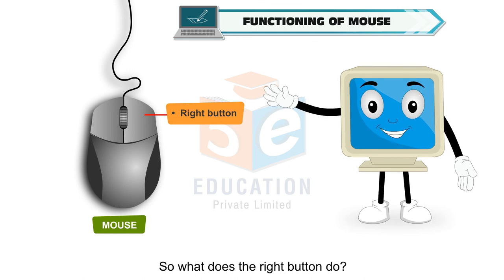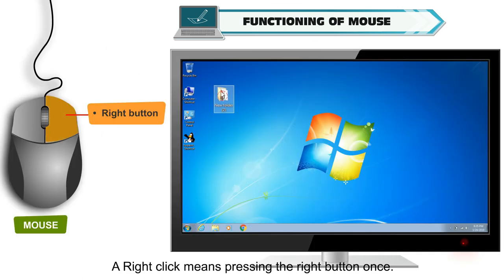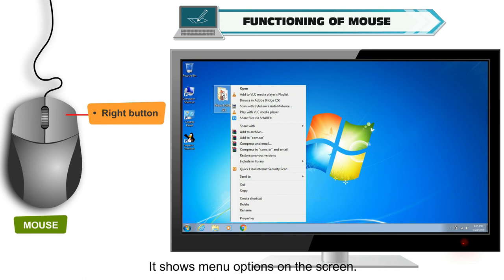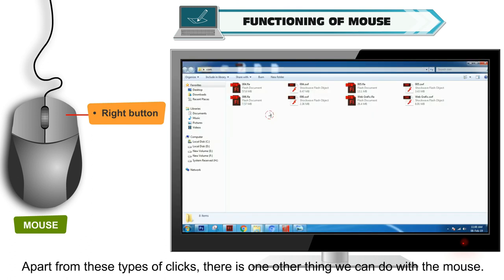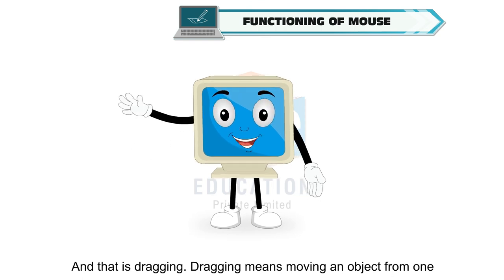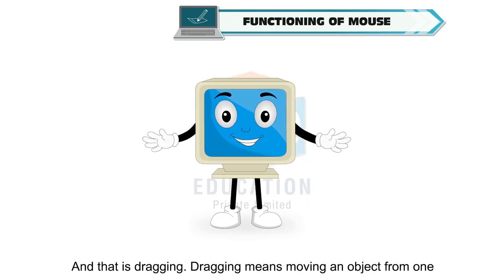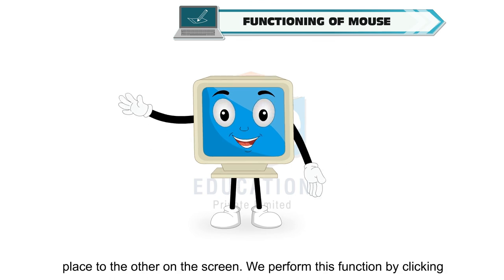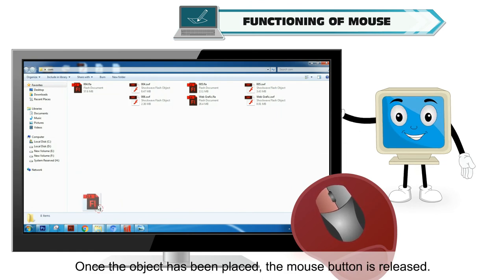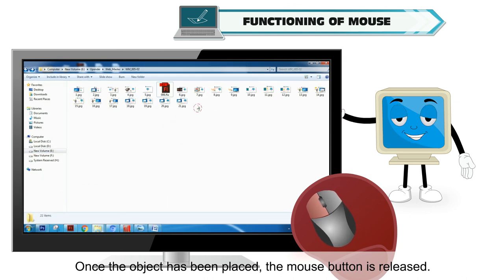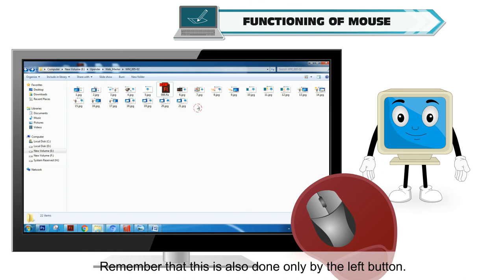So what does the right button do? A right click means pressing the right button once; it shows menu options on the screen. Apart from these types of clicks, there is one other thing we can do with the mouse, and that is dragging. Dragging means moving an object from one place to another on the screen. We perform this by clicking and holding the left mouse button; once the object has been placed, the mouse button is released. Remember that this is also done only by the left button.